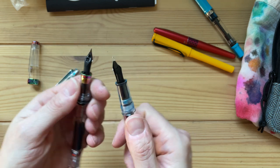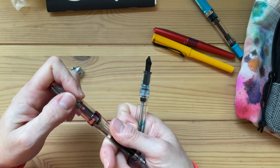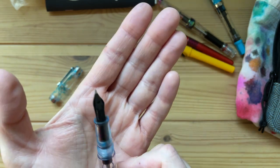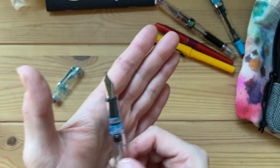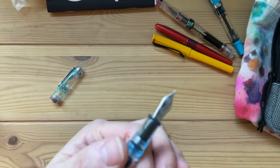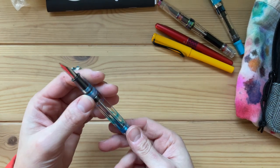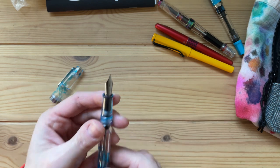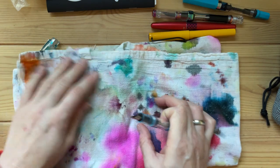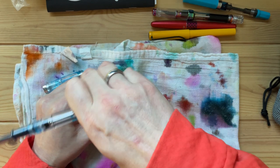This is a Jowo nib, whereas the Navalure is supposed to be their own pen. It's their own in-house design. They're supposed to be very smooth. So I'm going to give this a fill and see how that works for me right now.